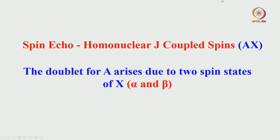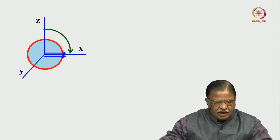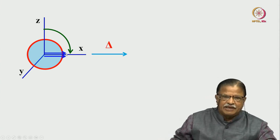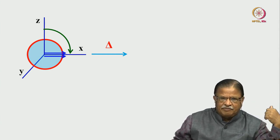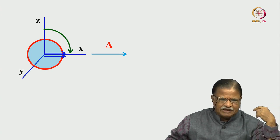I previously took an example where J was zero, to consider only chemical shift. Now I will consider an example with J coupling present — a two-spin AX system. Spin A coupled to X gives a doublet, because of the alpha and beta spin states of X. After a 90° pulse bringing magnetization to the x-axis, spin A has two vectors corresponding to the alpha and beta orientations of X.